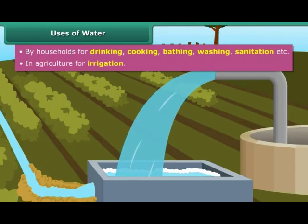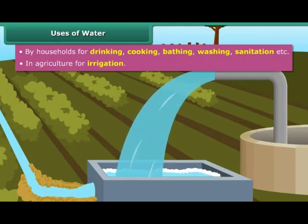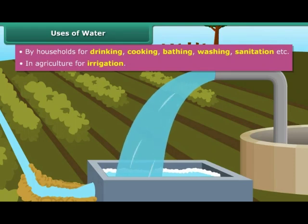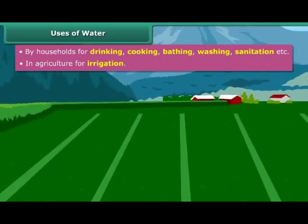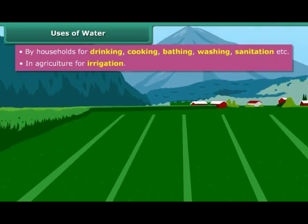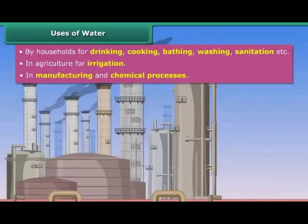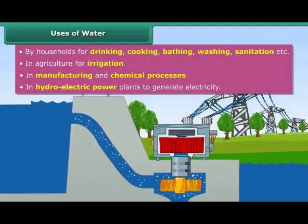Irrigation facilities improve agricultural output and help meet the growing demand for food from a growing world population. Irrigation acts as an insurance against the vagaries of nature. Water is also used in industries for cooling purposes and as a solvent, and it is also used to generate electricity.